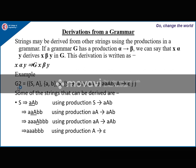Suppose we have G2 = ({S, A, B}, {a, b}, P, S) with given productions. Starting with S derives A(AB), we can replace AA by AAAB. Now substituting A = epsilon, we get aaabbb, that is a³b³.